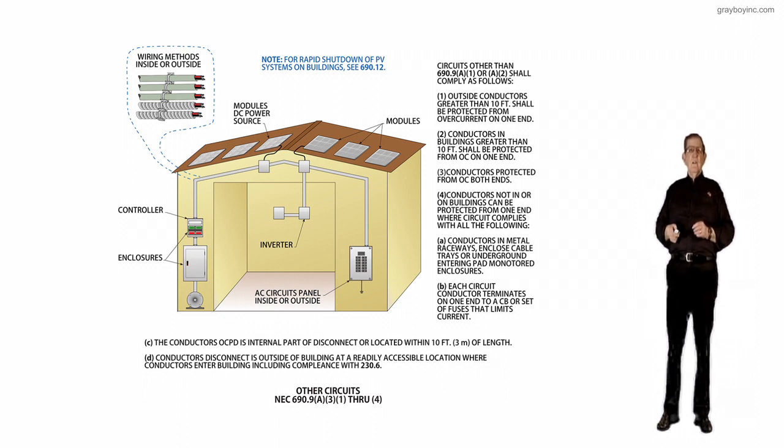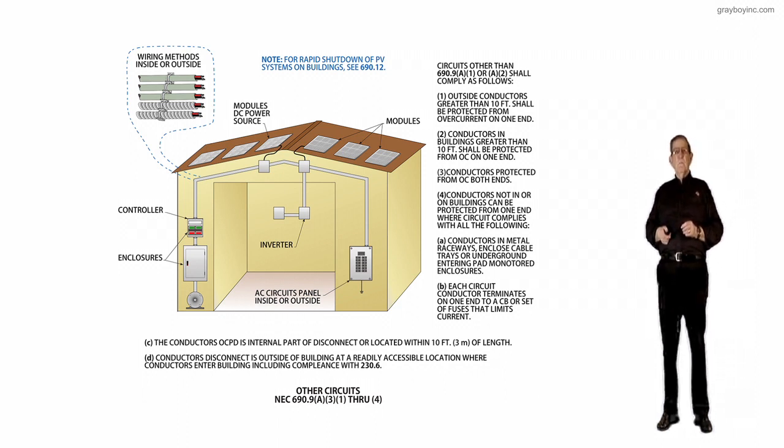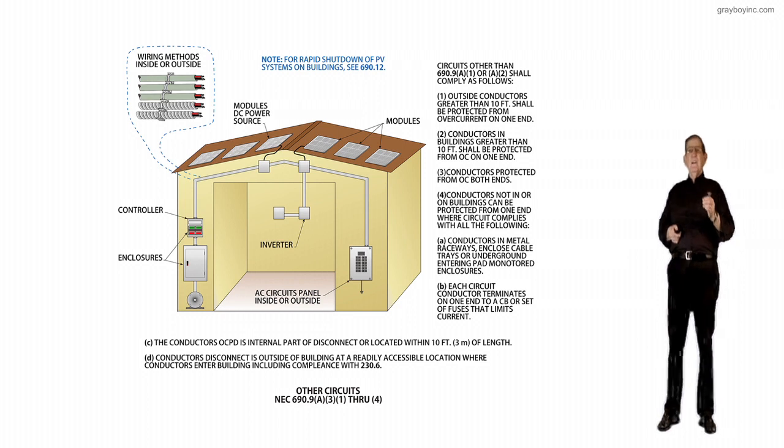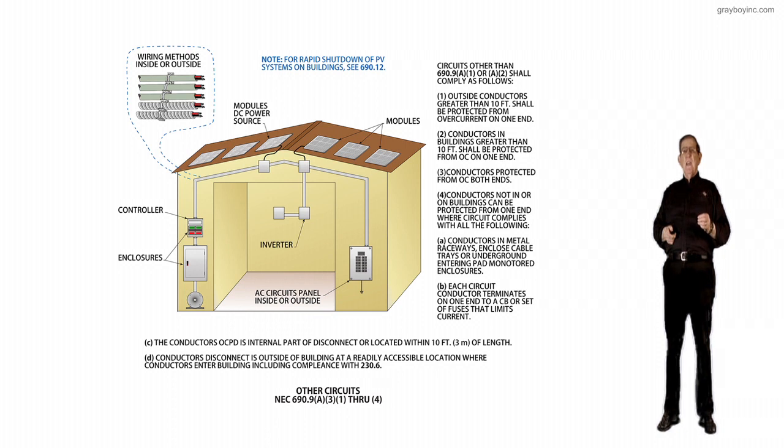And the conductors overcurrent protection is internal part of the disconnect or located within 10 feet of length. D: conductors disconnect is outside of building at a readily accessible location where conductors enter building.